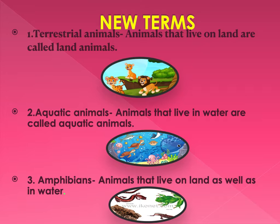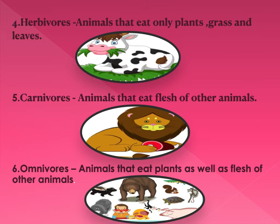Now let us recap some of the new terms we have learnt in this chapter. Terrestrial animals: animals that live on land. Aquatic animals: animals that live in water. Amphibians: animals that live on land as well as in water. Herbivores: animals that eat only plants, grass and leaves. Carnivores: animals that eat flesh of other animals. Omnivores: animals that eat plants as well as flesh of other animals.